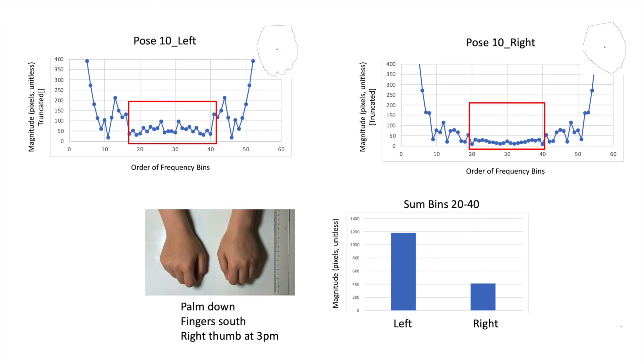Here is pose 10. For pose 10, my fingers are clenched into a fist. The palm is facing down, fingers are facing south, meaning they are down, and the right thumb at 3pm. The index of summing the frequency bars outlined in red shows that right is still less than left.